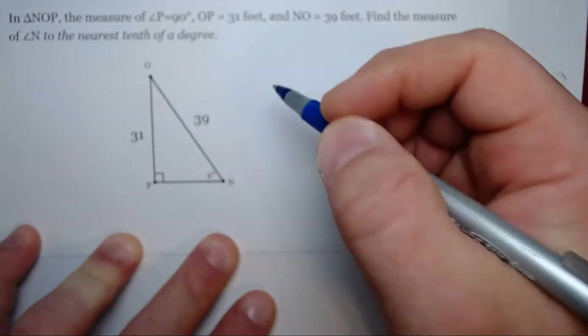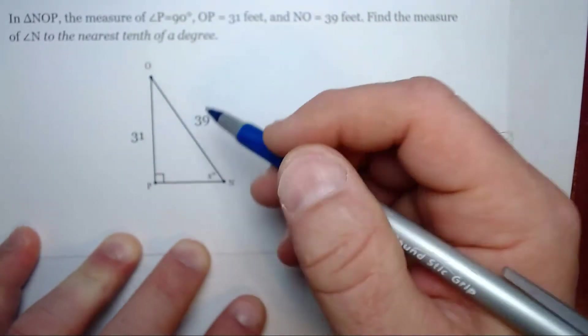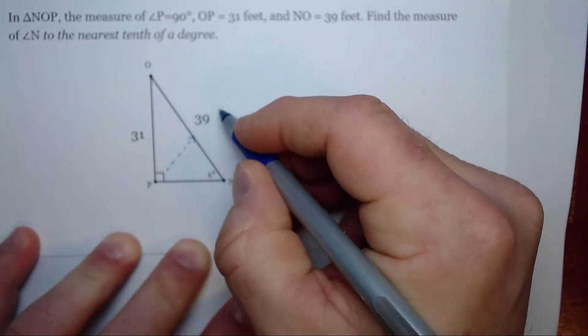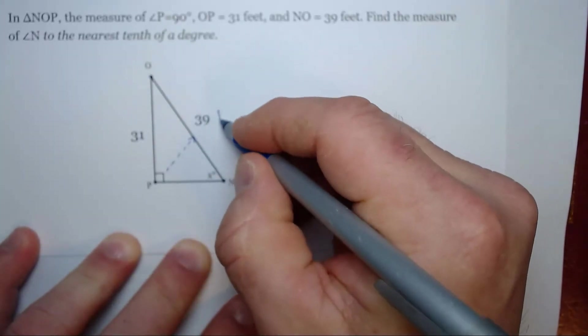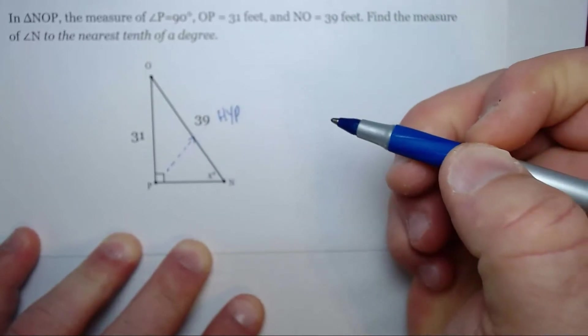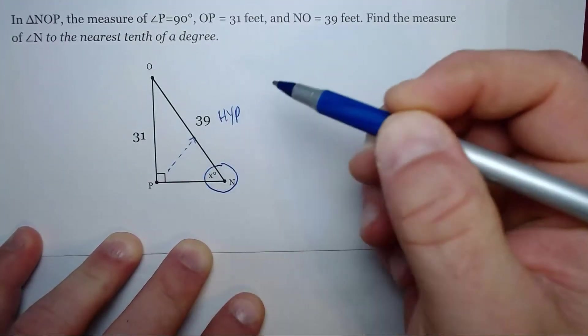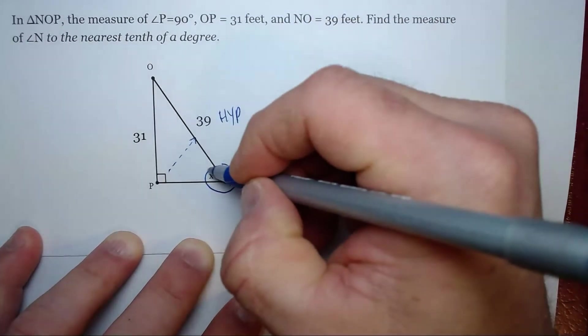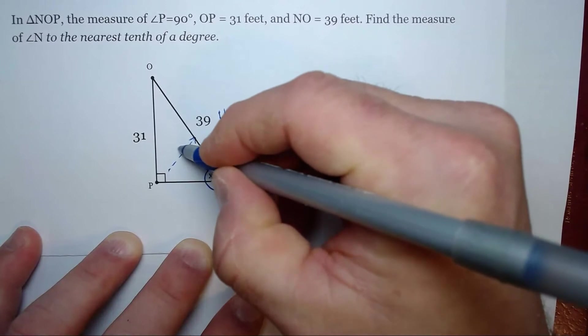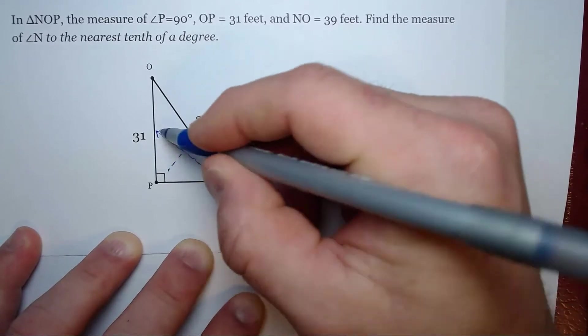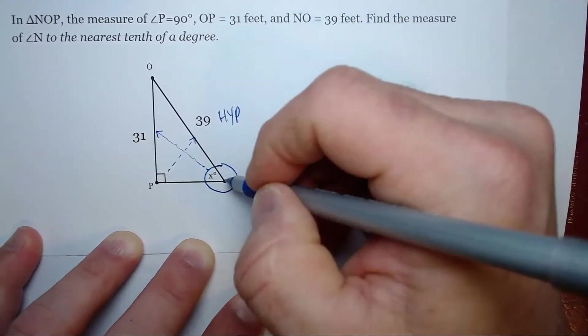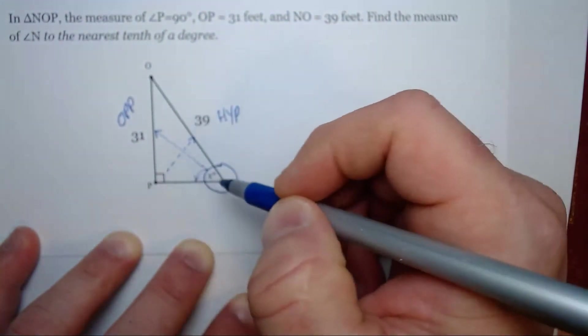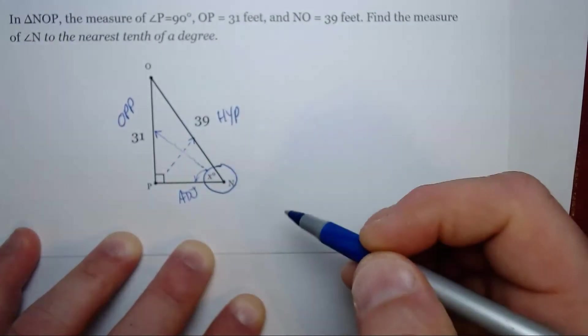The first thing we're going to do is label our triangle. That's what we should always do first. The side furthest away from the right angle and the longest side is our hypotenuse, so I'm going to write HYP. This is the angle I'm working with, so I'm going to circle that. Now let's label the side that's furthest away from my reference angle as opposite, and the side closest to my reference angle as adjacent.